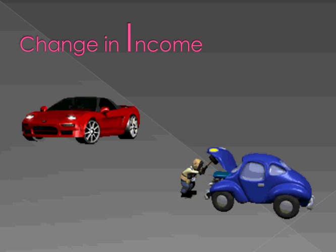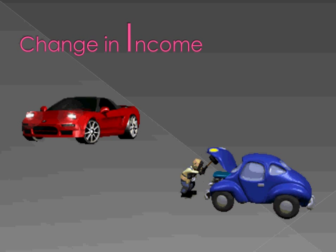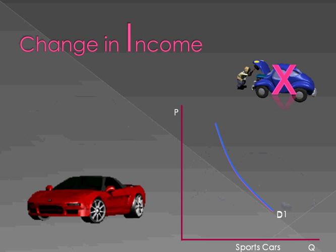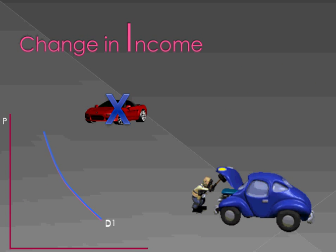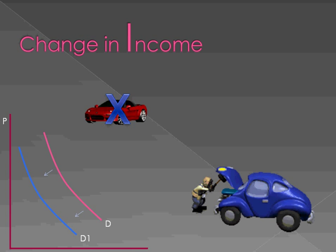Change in income. There are basically two types of goods: normal goods — the goods that you would buy more of as you have more income — and inferior goods, which you would buy fewer of as your income goes up, and more of as your income goes down. If we have an increase in income, that's going to increase our demand for sports cars because we have more money to spend. By the same token, if our income goes down, we're going to increase our demand for the old junker and decrease our demand for sports cars.